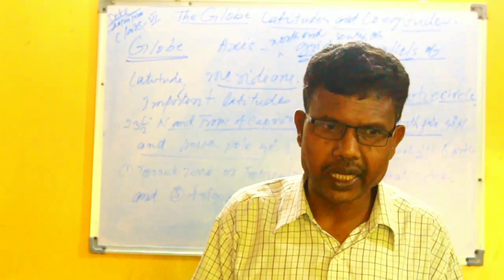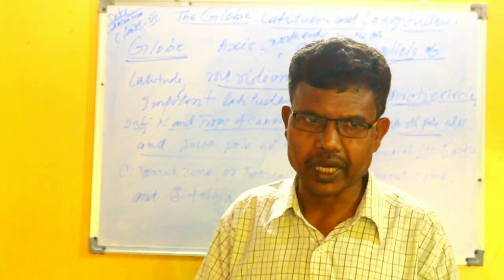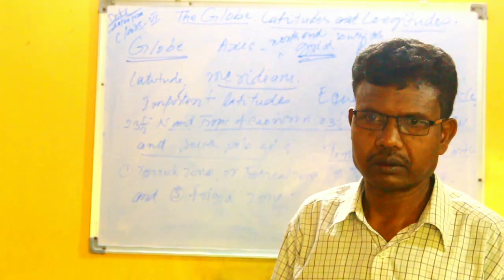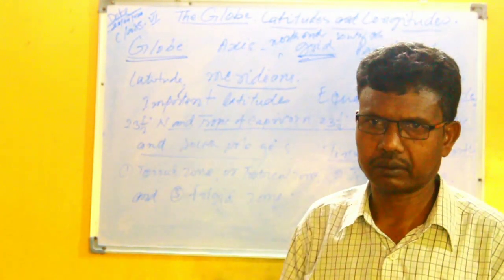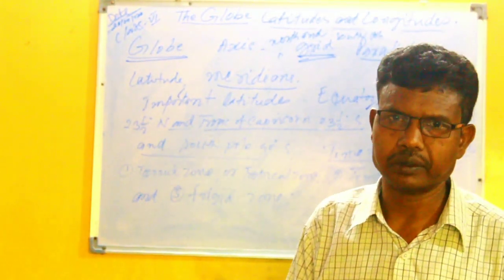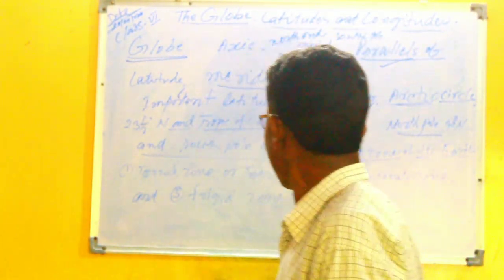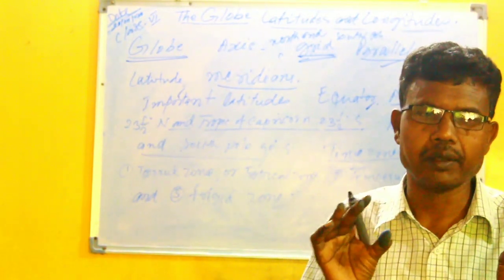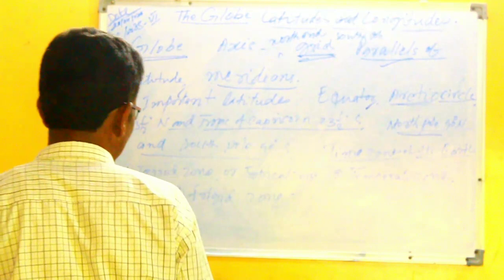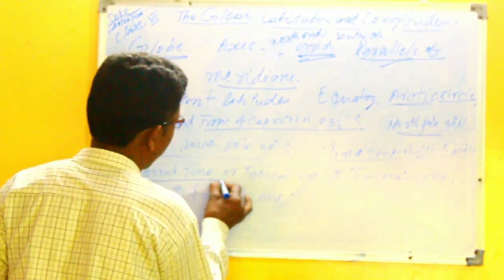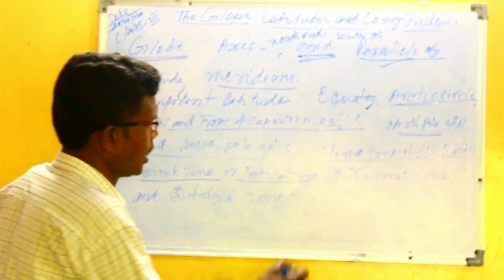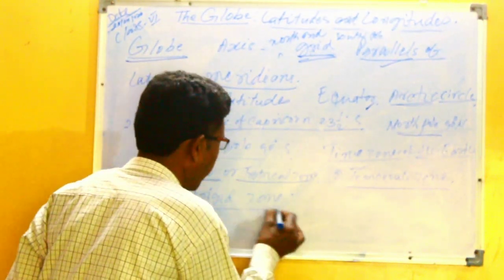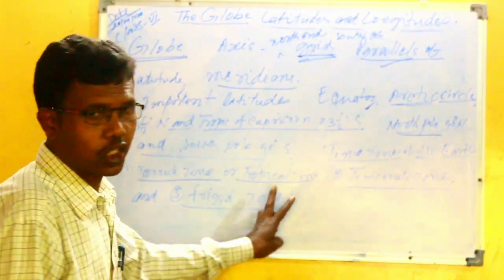It means the temperature on the surface of the Earth is not equally distributed on all places, as the amount of heat received from the sun varies. The Earth is divided into three distinct heat zones: torrid zones or tropical zones, temperate zones or moderate zones, and frigid zones or cold zones.